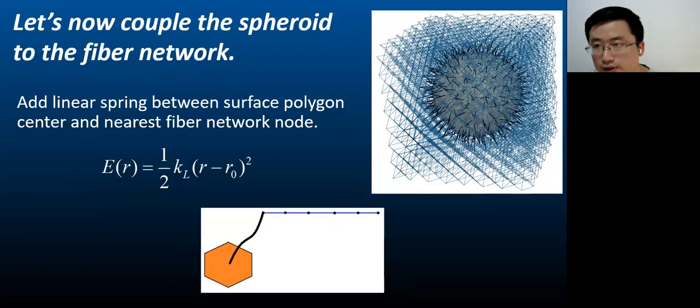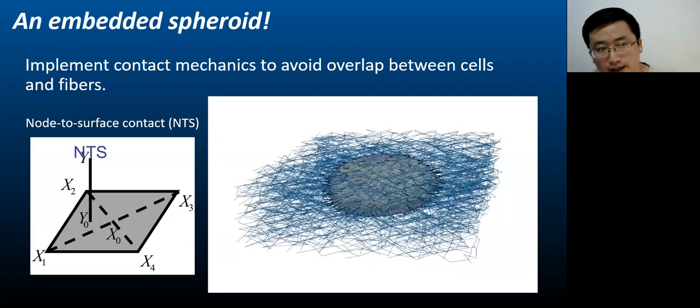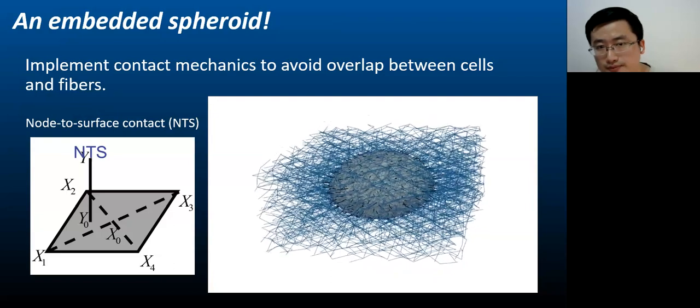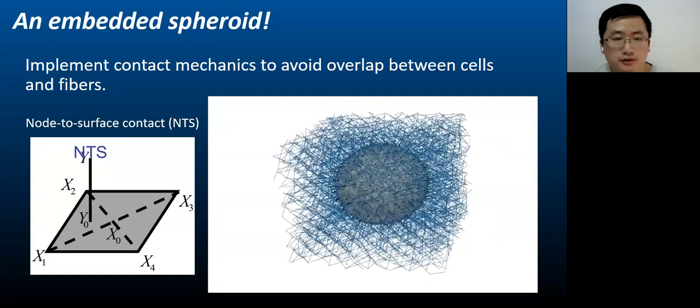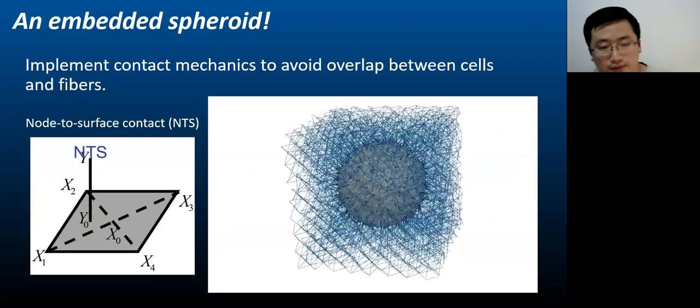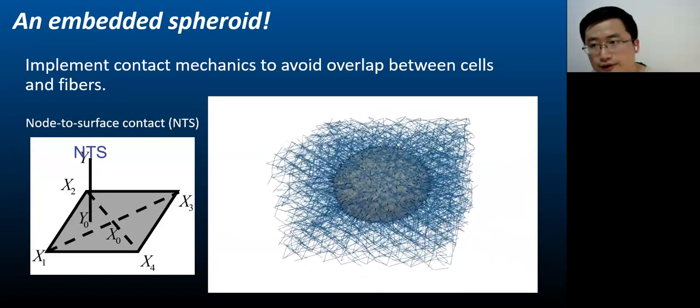Let's now couple the spheroid to the fiber network. We can add linker springs attached between the center of boundary surface polygons of cells and the nearest vertices in the fiber network. These linker springs represent focal adhesion, which is simple linear springs. We also implement contact mechanics to avoid overlap between cells and the fibers. If fiber vertices approach the surface and become too close to it, there will be a repulsive potential generated repulsive force to push the fiber away from the surface.